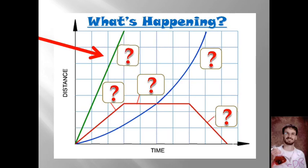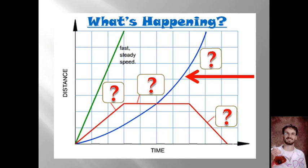This green line is moving at a fast, steady speed. It's fast because it has a very steep slope. It is steady and constant because the line is straight, and that's different from this one, which means it's accelerating because it's curved, and it's getting faster every moment in time. It's traveling faster and faster and faster.